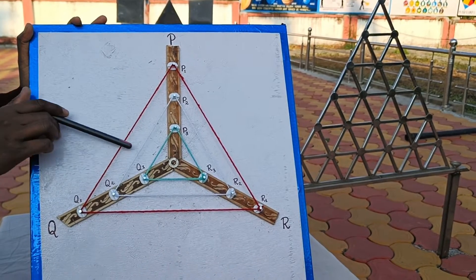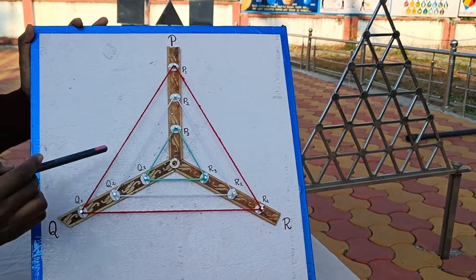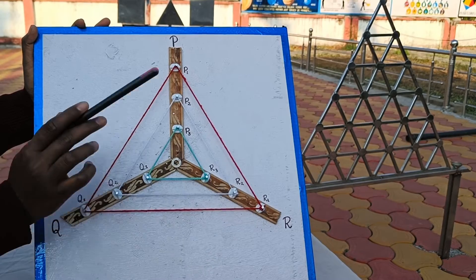Wind the thread around the nails of subscript P1, Q1, R1 on three respective strips.